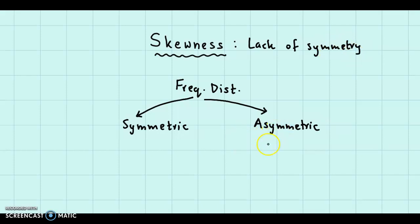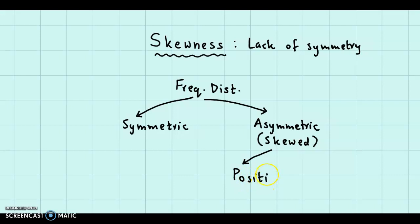Skewed distributions — we call them asymmetric distributions, or we can call them skewed distributions. Skewness can be of two types: it could be positive, meaning the distribution can be positively skewed, or the distribution can be negatively skewed — that is, there would be negative skewness.